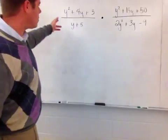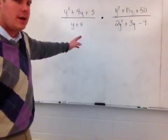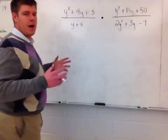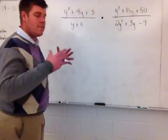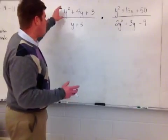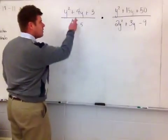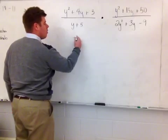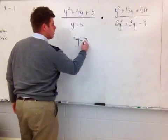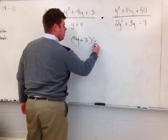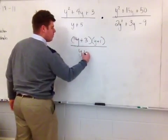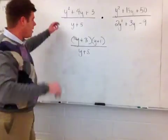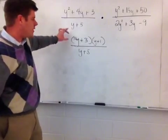And in this case, y squared plus 4y plus 3 can be rewritten as its product of its factors. And the product of its factors so happen to be very specific. And this particular function is being y plus 3 times y plus 1 divided by y plus 5. So all I've done is rewritten this expression as a product of its factors.